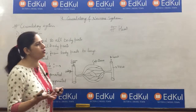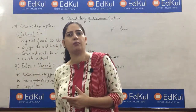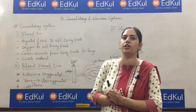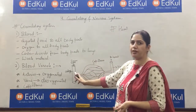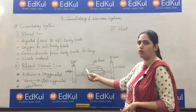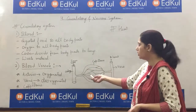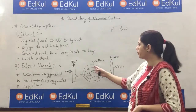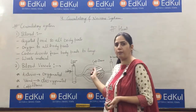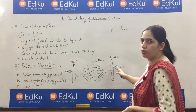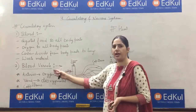Capillaries are the link between arteries and veins. When arteries reach any body part, they split into smaller blood vessels called capillaries. You can see — this is an artery, and these arteries split into smaller blood vessels, which are capillaries. Exchange of carbon dioxide and oxygen takes place in these capillaries only. Then this blood goes to veins and back to the heart. So these are the types of blood vessels.